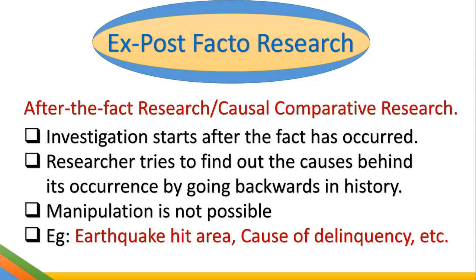For the earthquake hit area example, the researcher visits a place where an earthquake actually occurred. They find out how many people died and how many survived, forming two groups. The researcher then investigates where the dead bodies went, what treatments are being given to survivors, what inconveniences exist, and what precautionary steps have been taken. The researcher cannot bring any changes based on personal interest or belief — everything must be recorded as it is, and no facts can be manipulated.